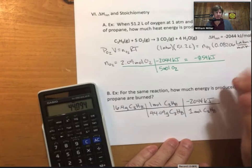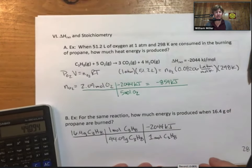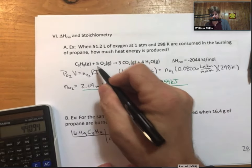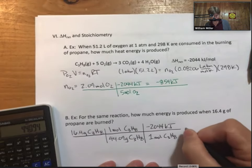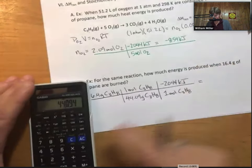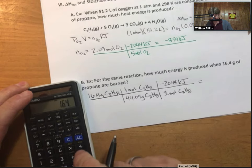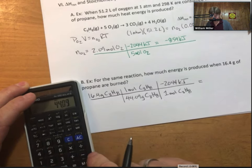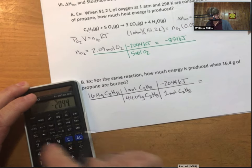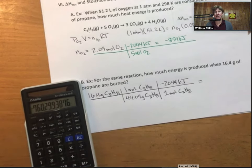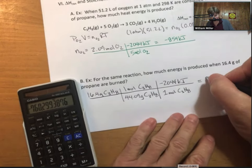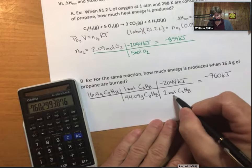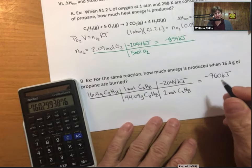In the previous example, we had to massage our delta H into that negative 2,044 kilojoules per 5 moles. Now let's multiply this out. This time I get minus 760 kilojoules. It is just kilojoules because all my other units cancel out.